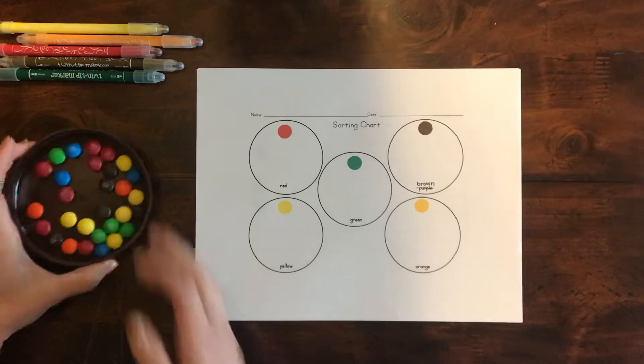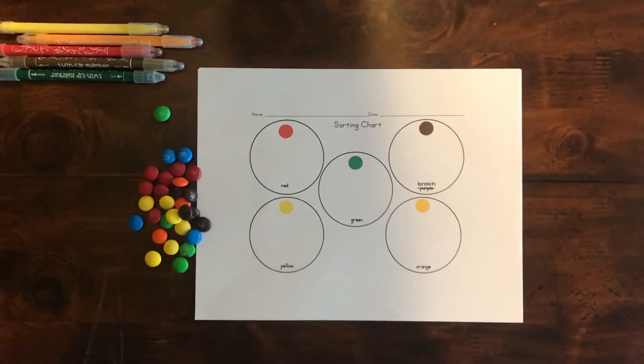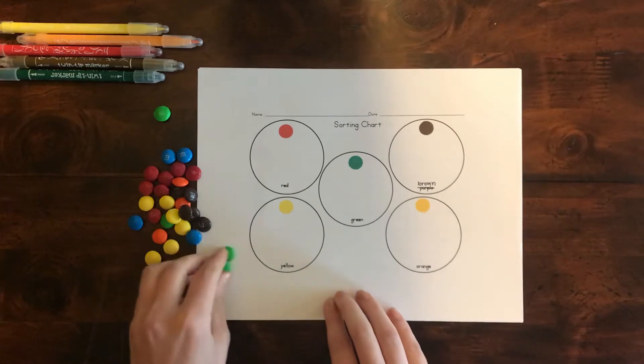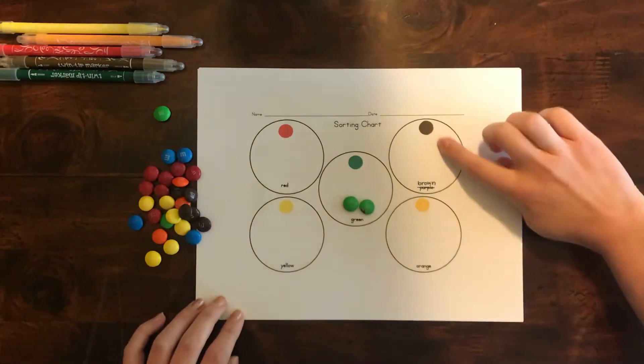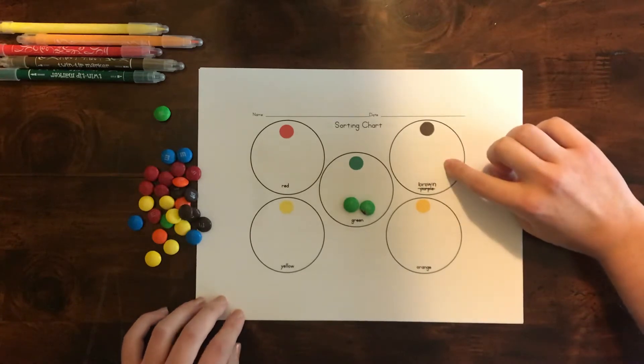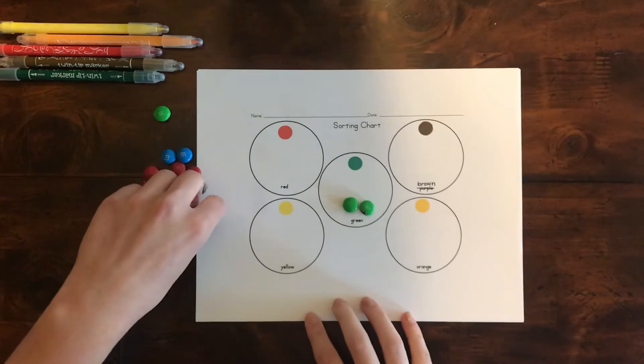So we're going to start on the sorting chart. I'm going to dump out all my M&Ms and then sort them into their circles. Now I had to change the purple into brown on this sheet because this is meant for Skittles, but I have M&Ms. You can use whatever you have.